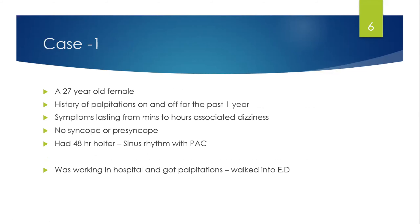Case one: a 27-year-old female with palpitations ongoing for the past one year. For any tachyarrhythmia or bradyarrhythmia, history is very important. Is it long-lasting? A short-lasting tachyarrhythmia tells you it's abrupt and gone. Ask about onset and duration — that helps differentiate symptomatic PVCs or PACs from a true arrhythmia. Duration and associated symptoms are key to investigation.